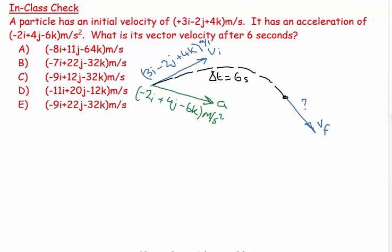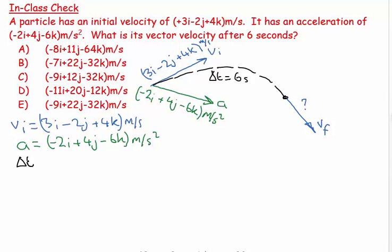The first thing I recognize is I need an equation that links these things. I know that I have Vi equals 3i minus 2j plus 4k meters per second, and I know that my a equals minus 2i plus 4j minus 6k meters per second squared.